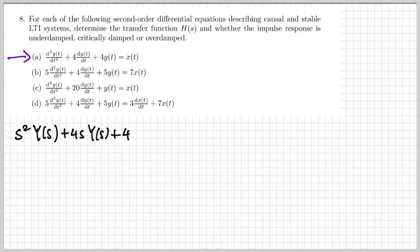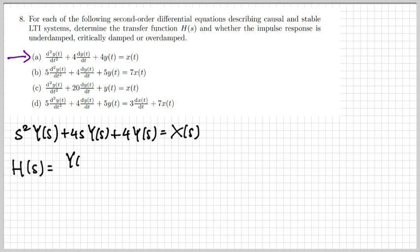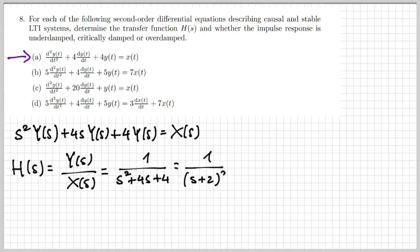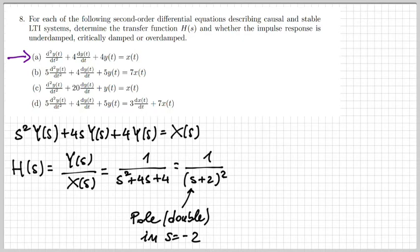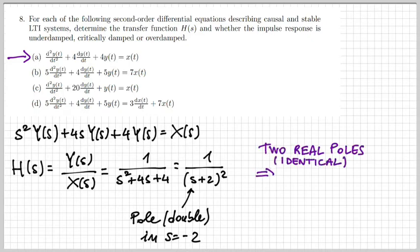For part A, I calculate the Laplace transform of both sides of the differential equation, recalling that each differentiation in the time domain corresponds to a product by s. From that I obtain H(s) as Y(s) over X(s) — a ratio of polynomials — and in this case it simplifies to 1 over (s+2)². Looking at the roots of the denominator, there is a single pole at s = −2 with double multiplicity, meaning that pole counts twice. When two real poles are identical, the system is critically damped.